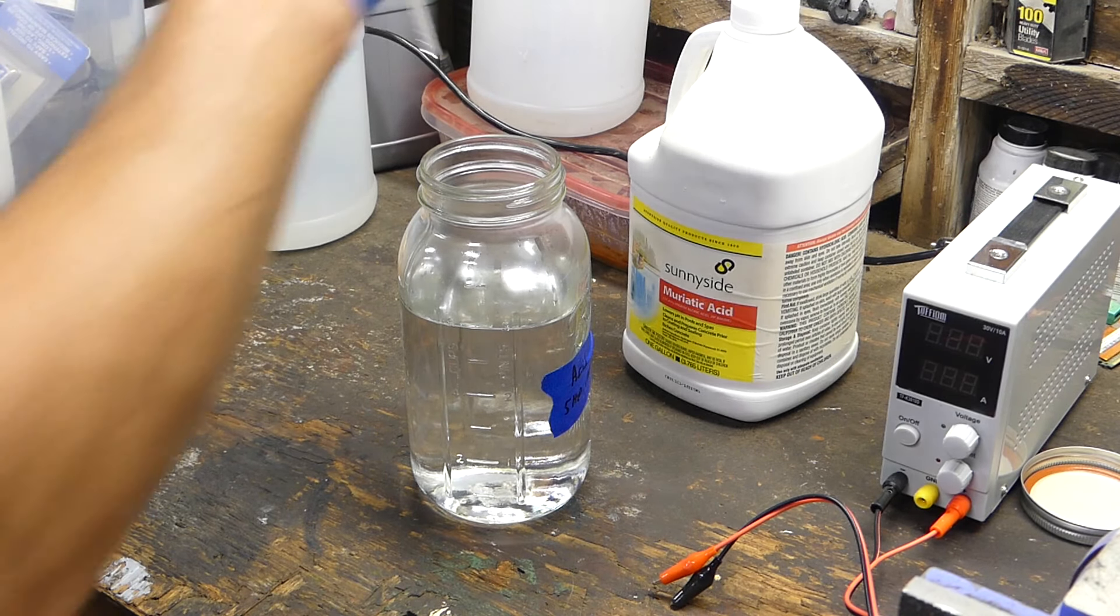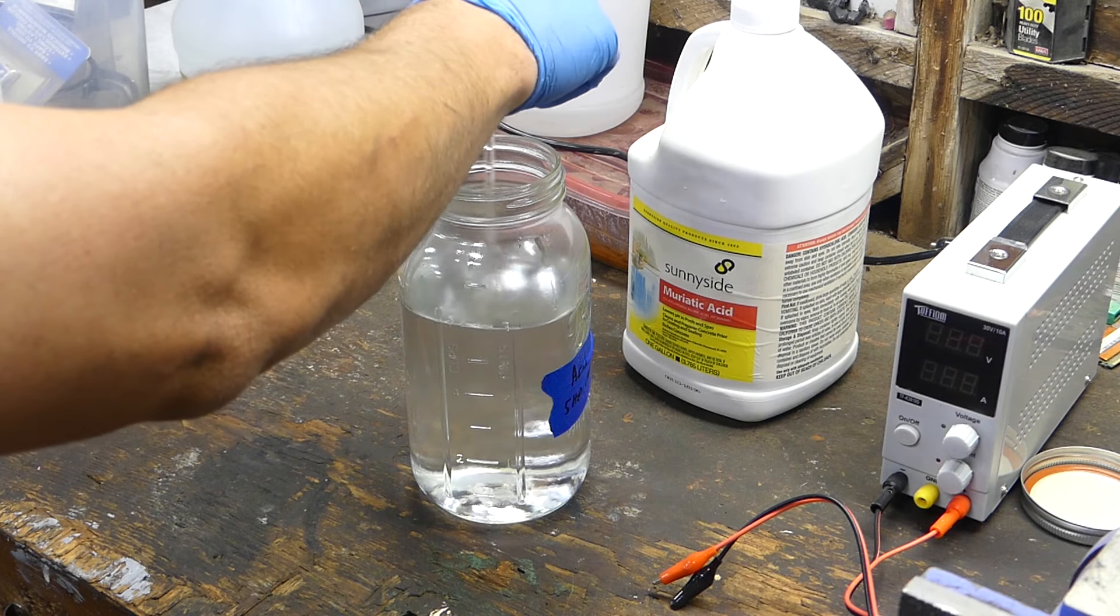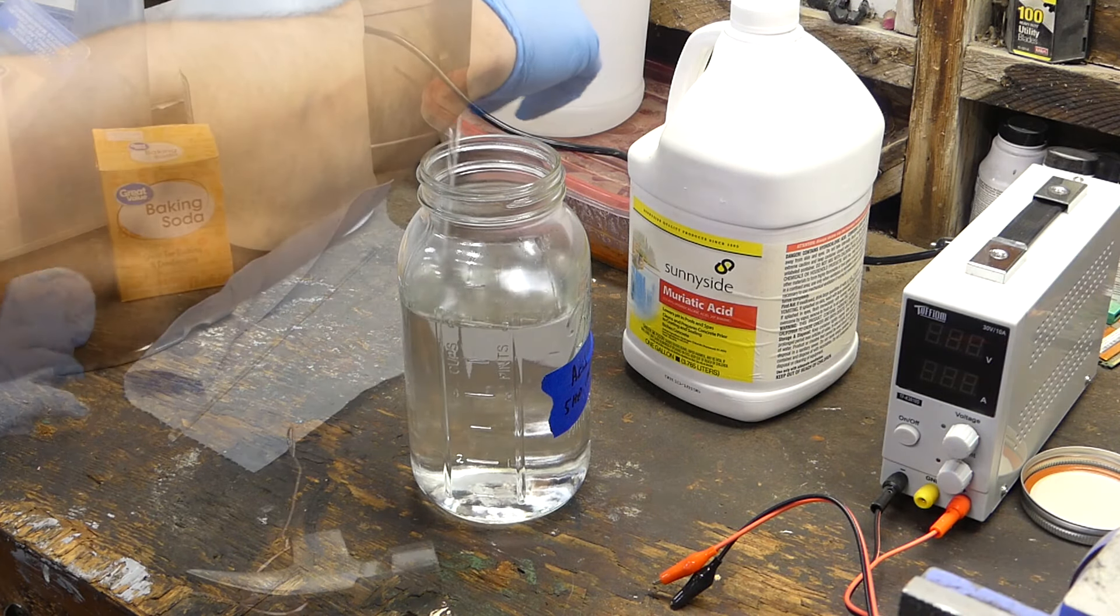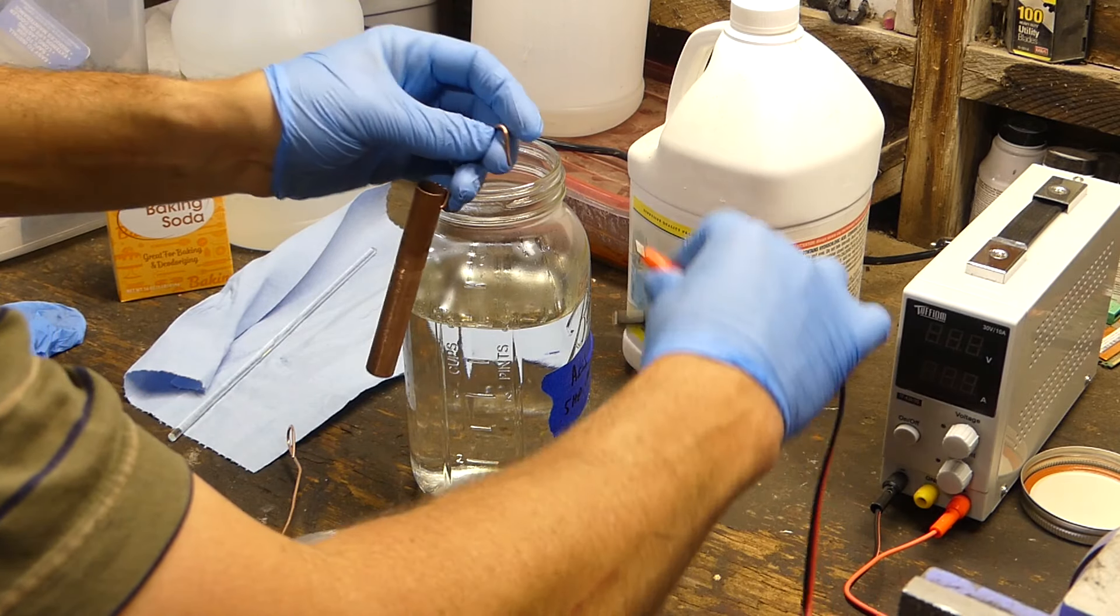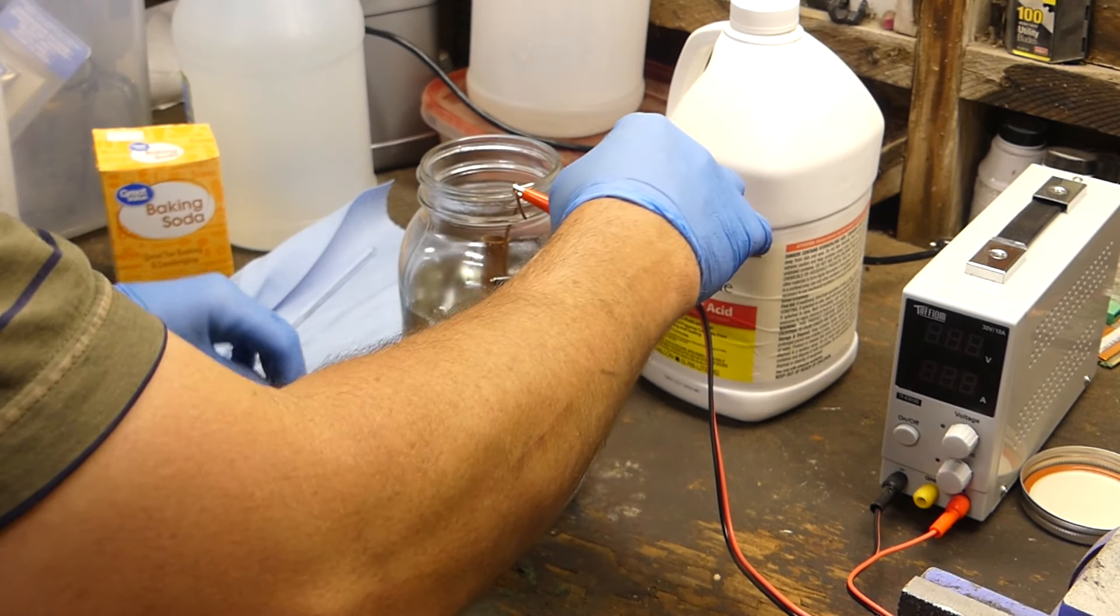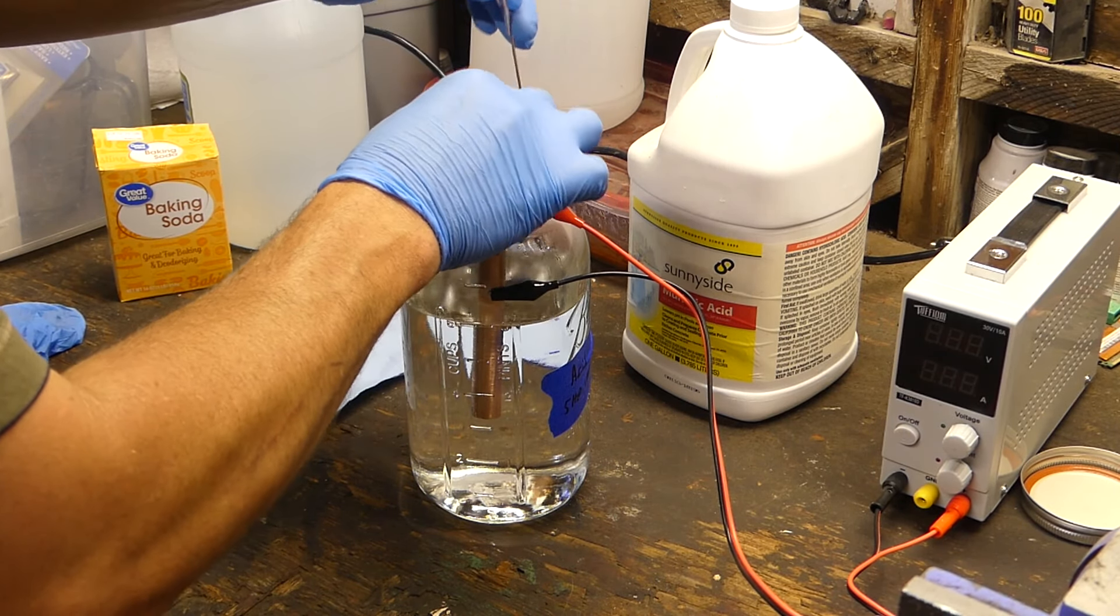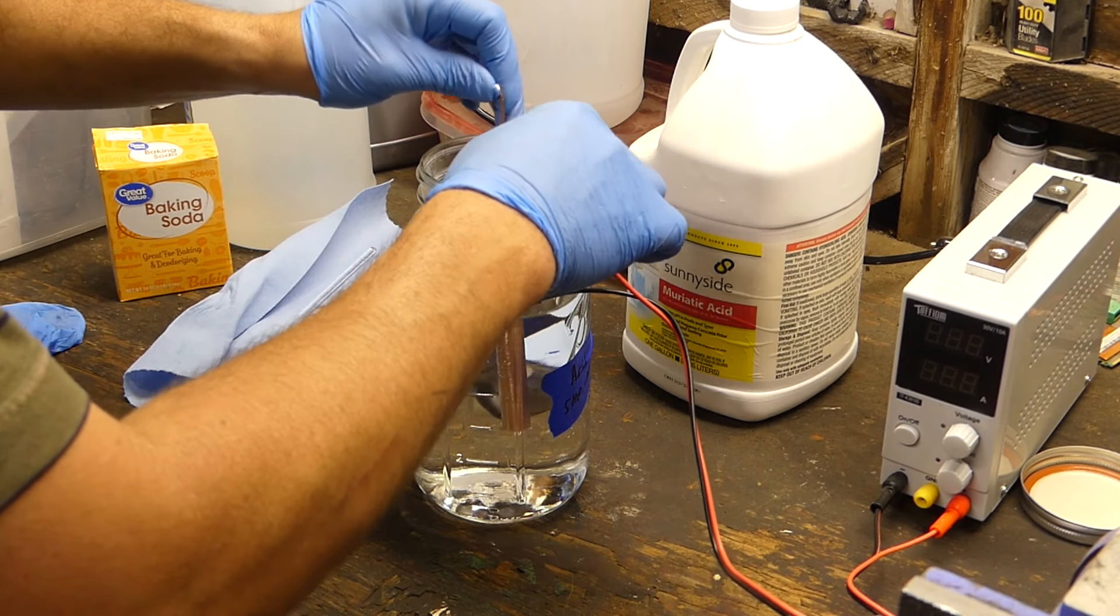I have an adjustable power supply that I use for this. That's a glass stir rod, just using to mix it all up. That's a piece of copper pipe I drilled a hole in and put some wire through. I'm hooking that up to the positive. To the negative, I hook up the part I'm going to be coating.